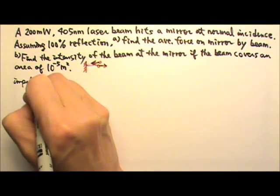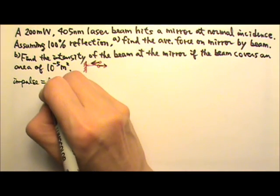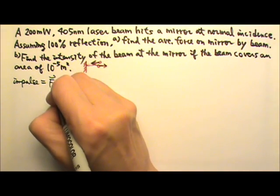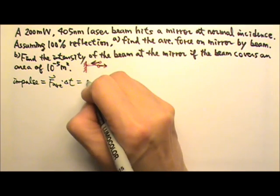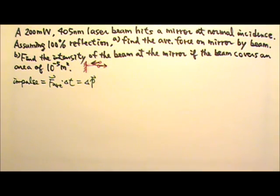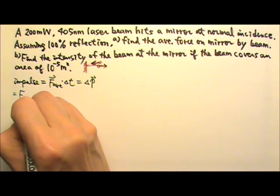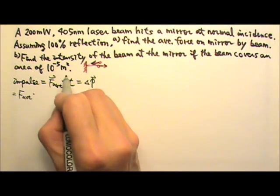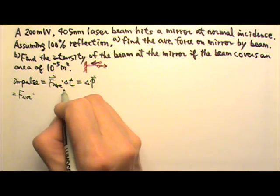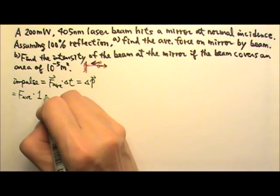The impulse equation is: impulse equals the average force times time, which also equals the change in momentum. Now it is an ongoing event, so we can just choose any amount of time to look at. In this case, it's probably easiest to look at one second.